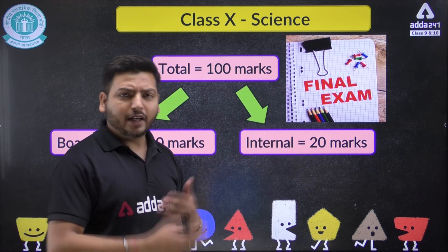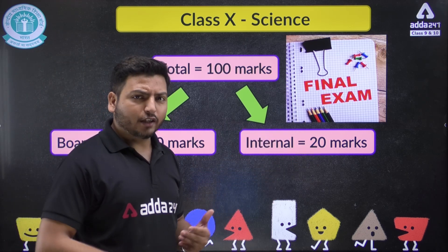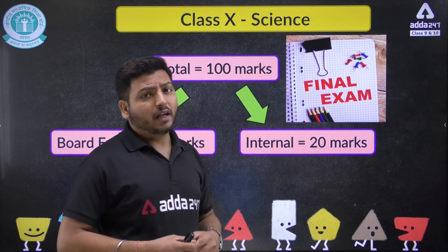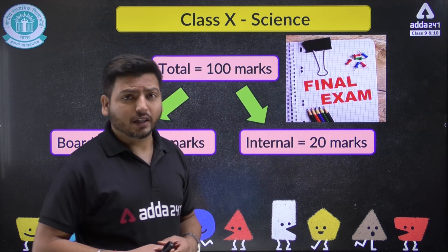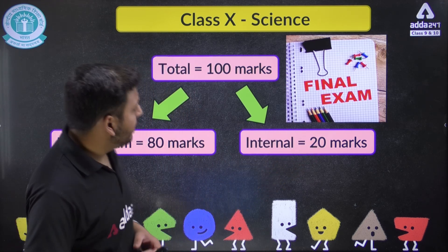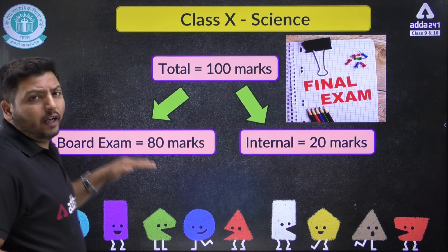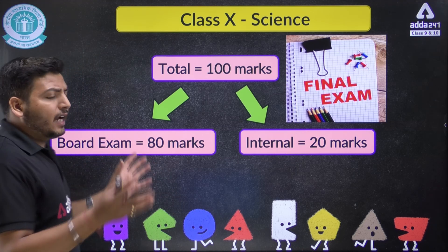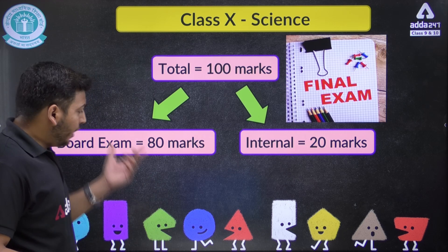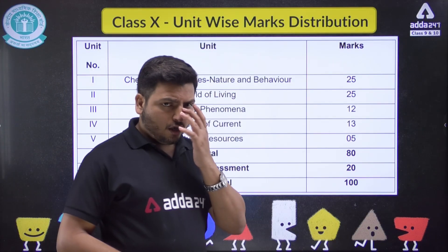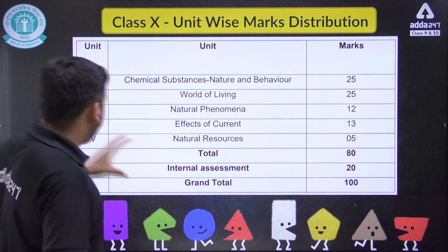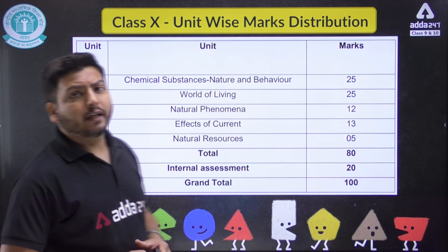You have to score 80 marks in theory; the remaining 20 is practical. If you follow the daily routine, you can score those 20 marks easily. The 80 marks are divided into many units, and in Science there are 5 units you will be asked about.